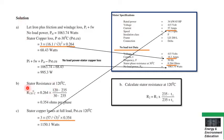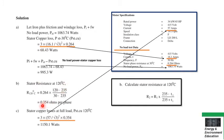Coming to Part B — stator resistance at 120°C. The formula shown earlier is applied here: R2/R1 = (235 + T1)/(235 + T2). Applying this formula with the given temperatures, the stator resistance at 120°C is calculated as 0.354 ohms per phase. This completes Part B of the numerical.